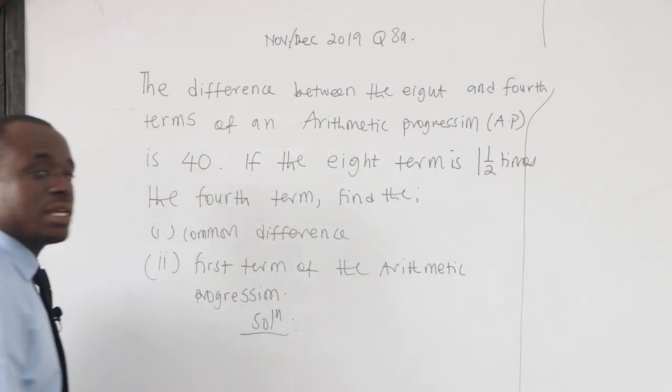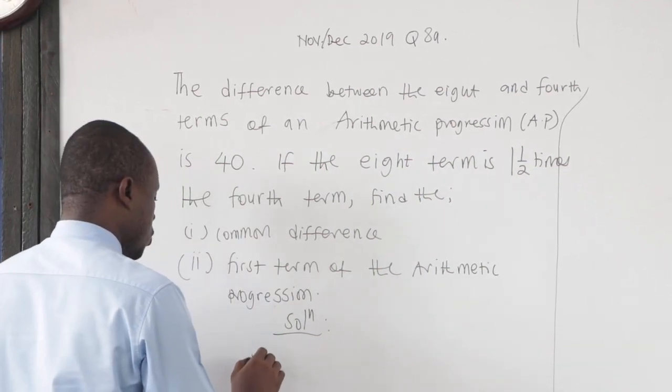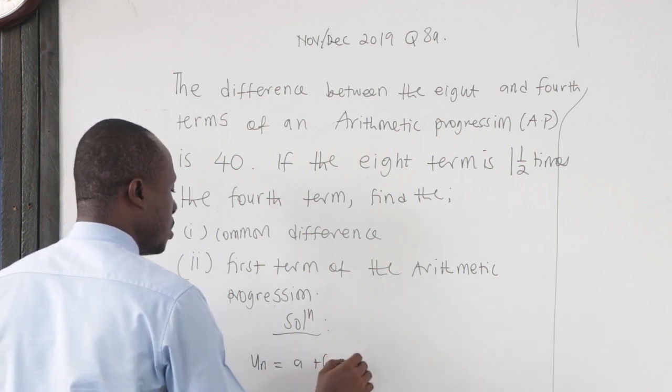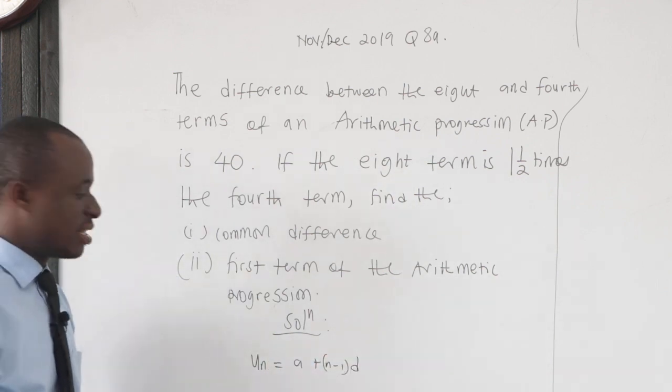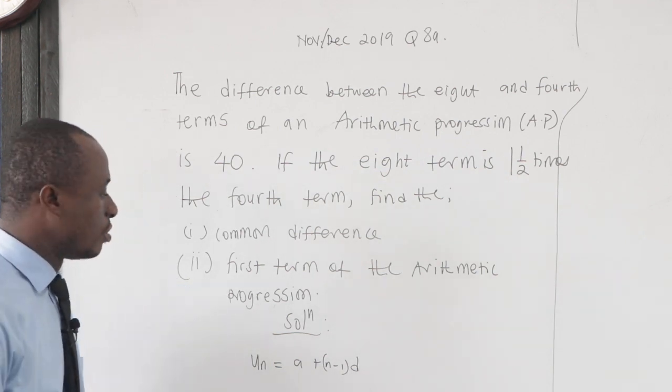Now this is an AP. What is the general term of an AP? The general term of an AP is u_n = a + (n-1)d, where a is the first term, n is the number of terms, and d is the common difference.